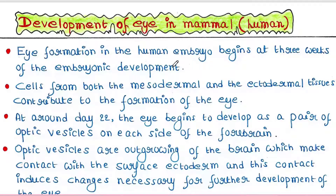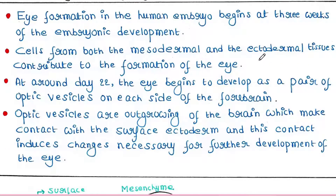Eye formation in the human embryo begins at 3 weeks of embryonic development. Cells from both the mesodermal and the ectodermal tissues contribute to the formation of the eye. We know that there are 3 germ layers in the embryo: ectoderm, mesoderm and endoderm. The outermost layer is ectoderm, the middle layer is mesoderm, and the innermost layer is the endoderm. Both the outermost layer — ectoderm — and the middle layer — mesoderm — contribute to the formation of the eye.